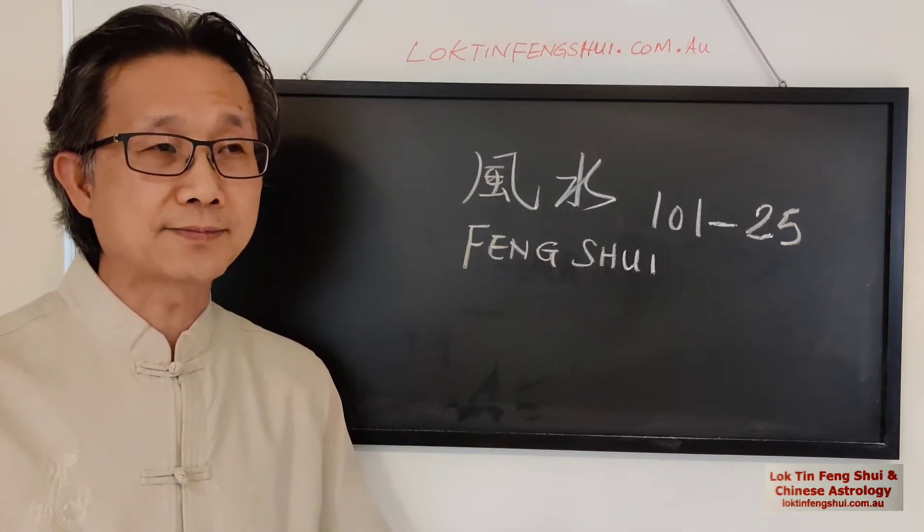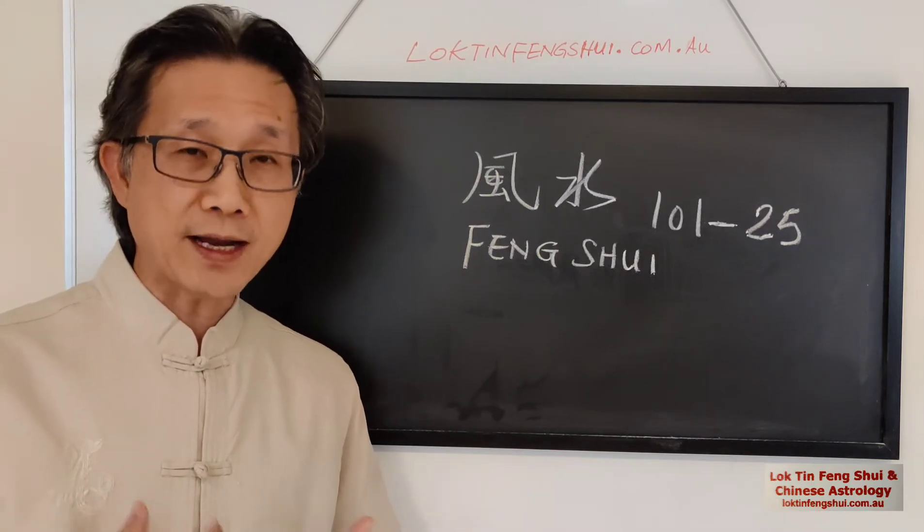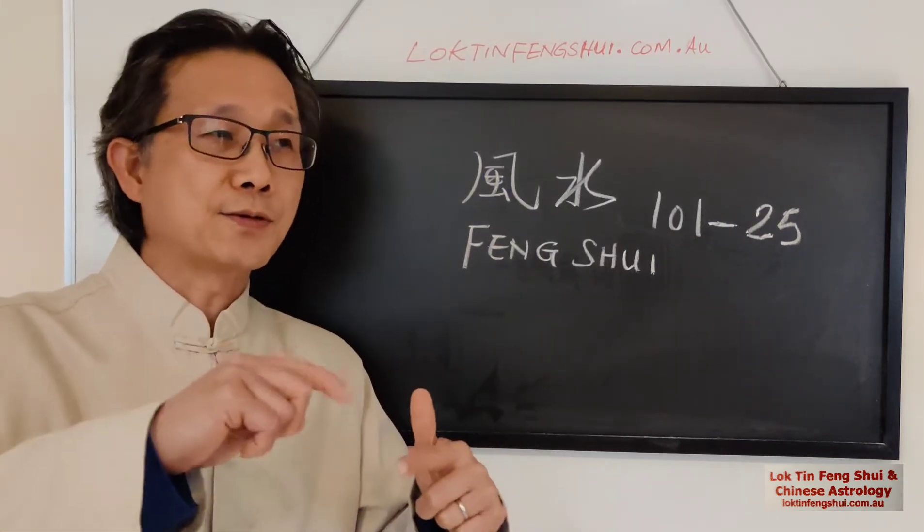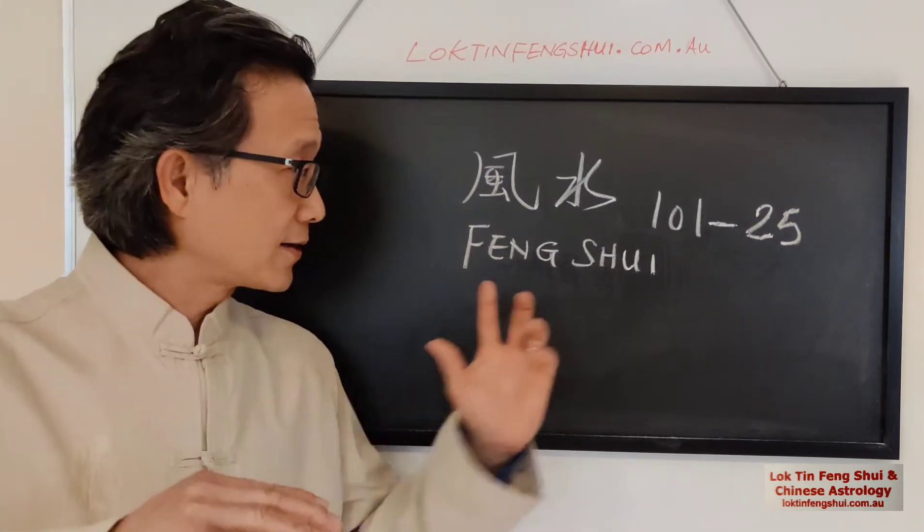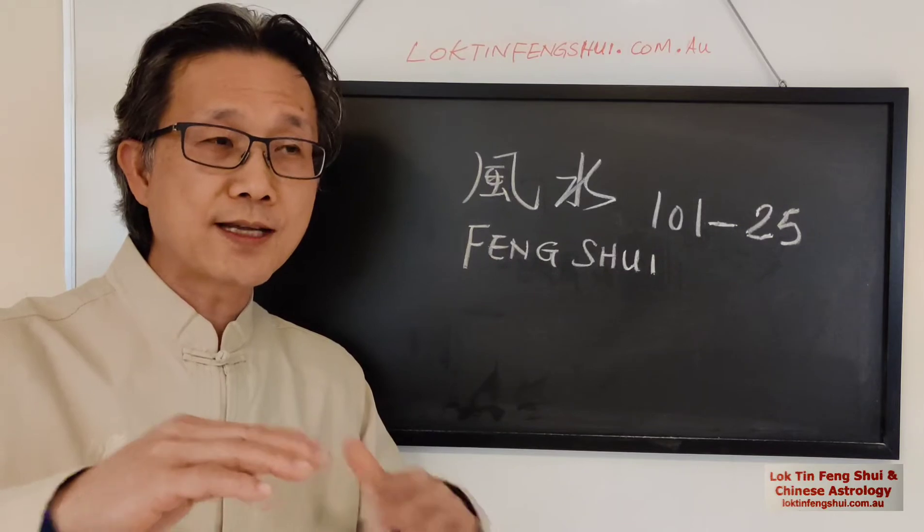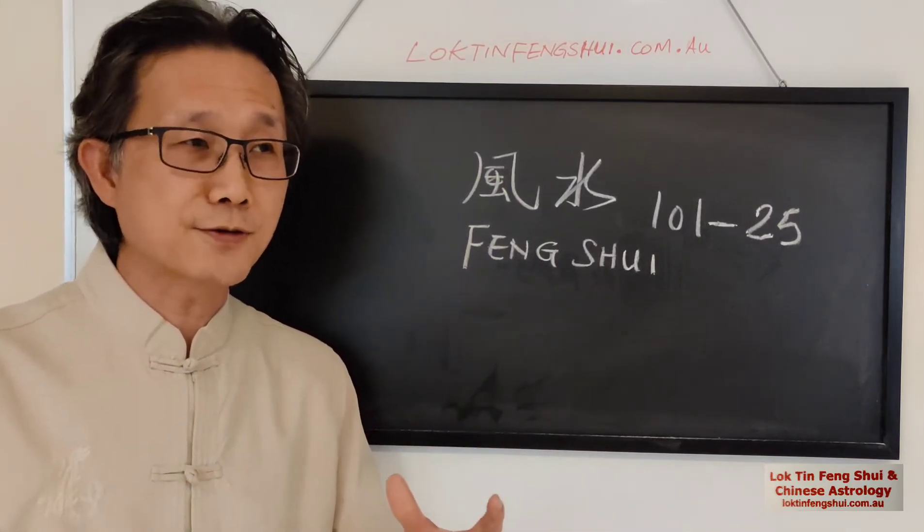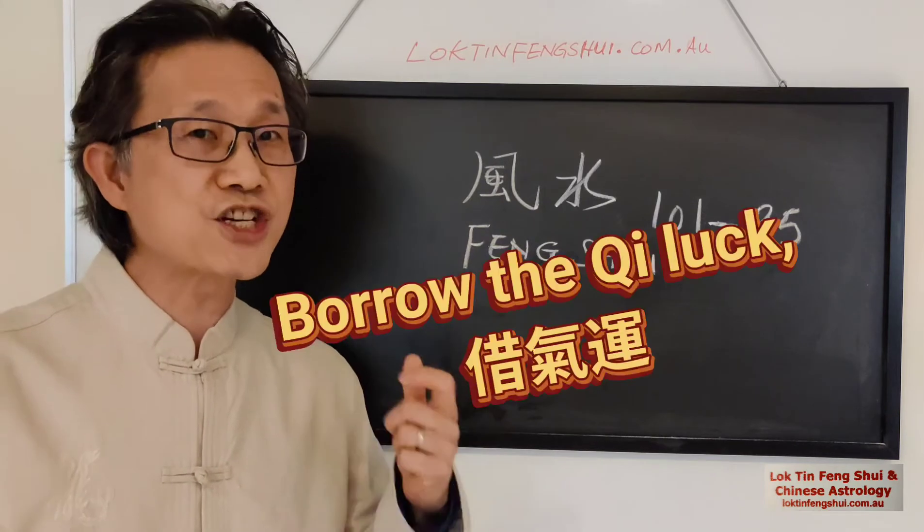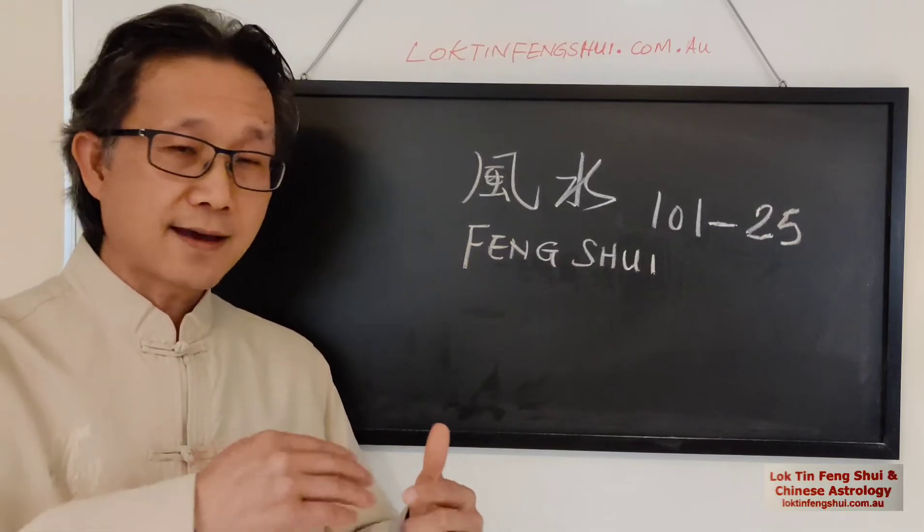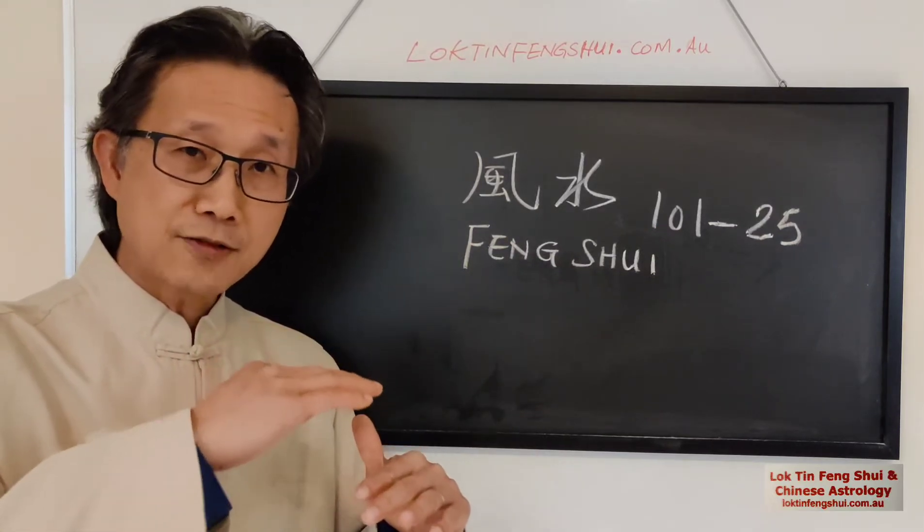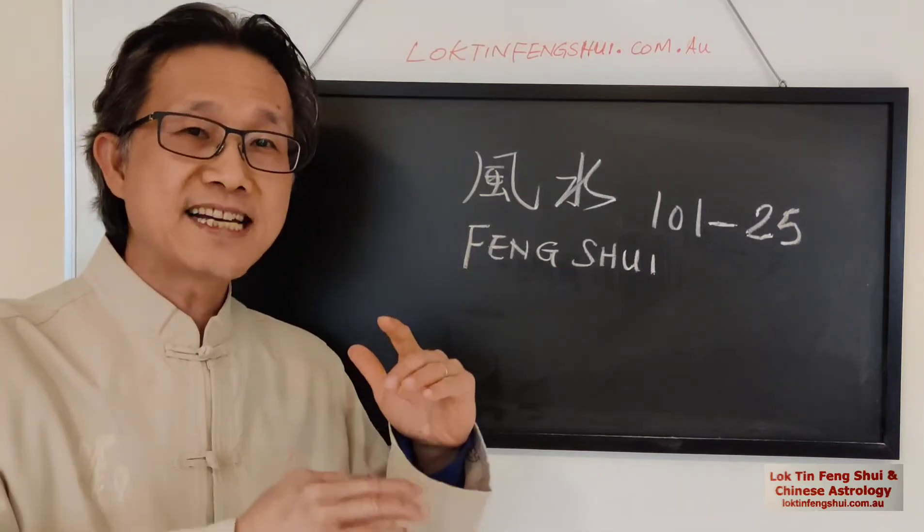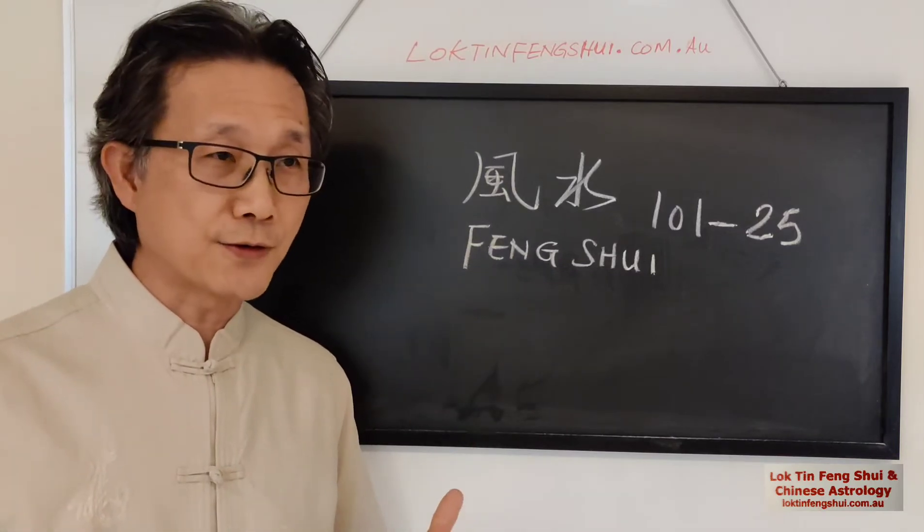According to our lineage, there's no one particular system is better than the other. There are different layers. Like the eight mansion, we're going to talk about later. It's one layer. Flying Star is one layer. In the Flying Star, in our school of system, we don't call it Flying Star Feng Shui. We call it the Borrow the Qi Luck Feng Shui. So it's a little bit different. And then we have the San Yuan Yuan Gua system and then the San He system. They actually can be interlinked together to produce good results for clients.